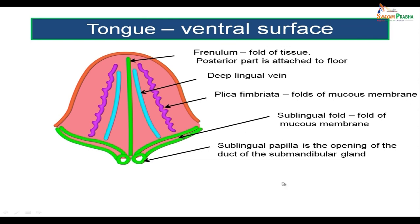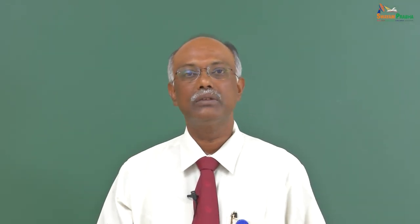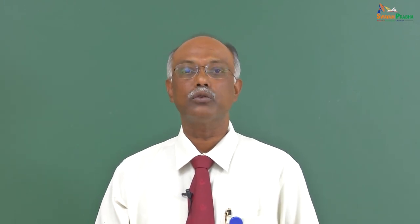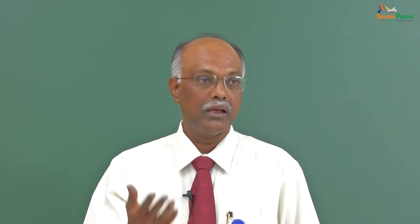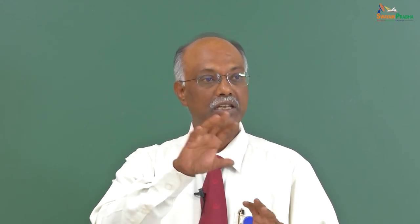Now let us come to the muscles which comprise the tongue. There are two categories: extrinsic muscles and intrinsic muscles. Extrinsic muscles originate outside the tongue and are inserted into the tongue. Intrinsic muscles originate and end within the tongue itself. The basic difference in action: extrinsic muscles change the position of the tongue, while intrinsic muscles change the shape of the tongue.